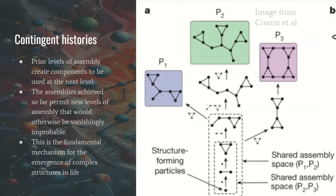The important point is that prior assembly creates the components that are used at the next level. In a living organism, there is a construction process out of basic molecules to build up larger and larger molecules ending up with giant ones like DNA. And the assembly that's been achieved so far permits new levels of assembly that would otherwise be vanishingly improbable.